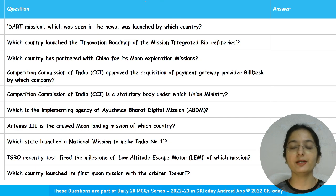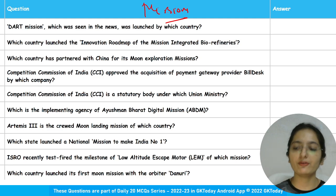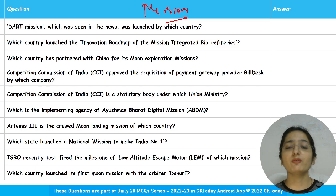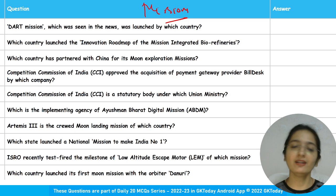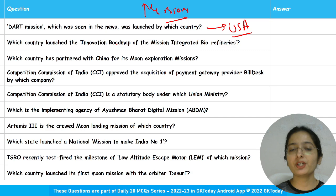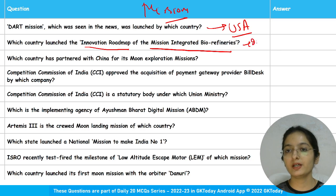Moving on to category-wise compilation, the first category covers missions in the news — from defense, science and technology, environmental, or any other sector. The first question: which country launched the innovation roadmap of Mission Integrated Biorefineries? The answer is USA.